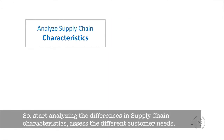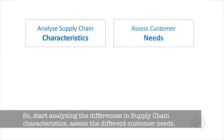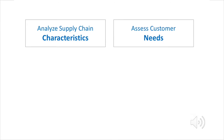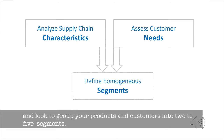Start analyzing the differences in supply chain characteristics, assess the different customer needs, and look to group your products and customers into 2-5 homogeneous segments.